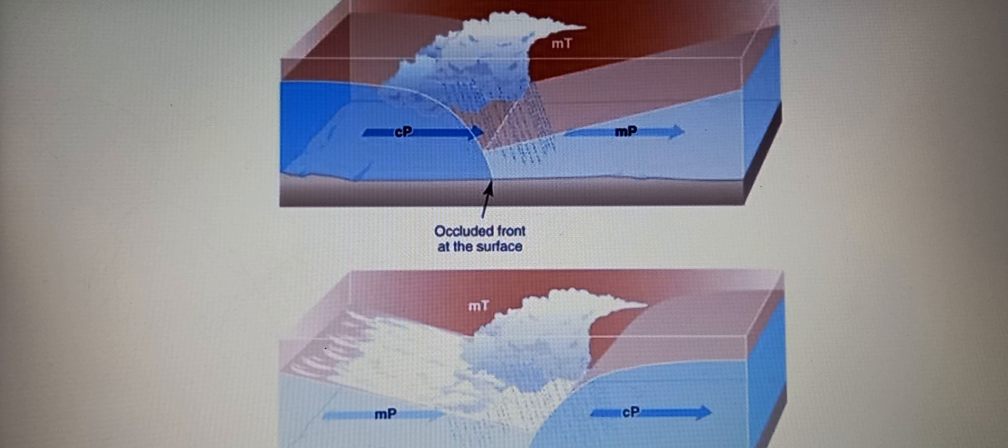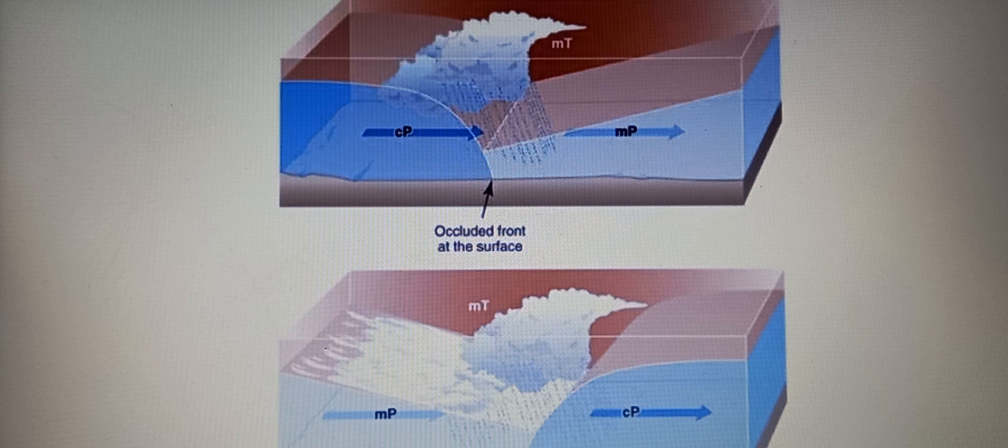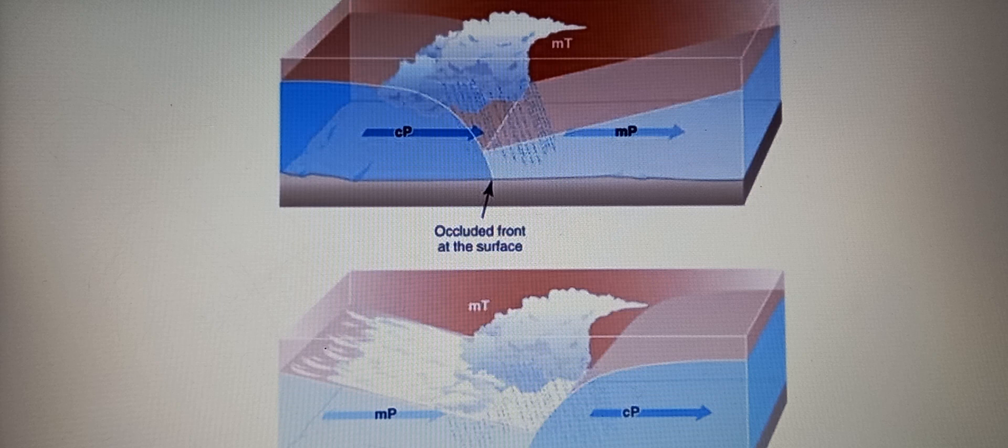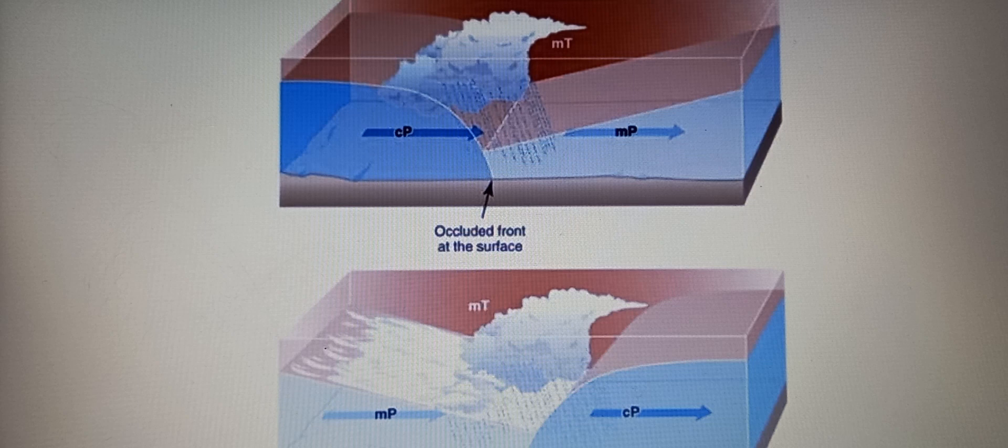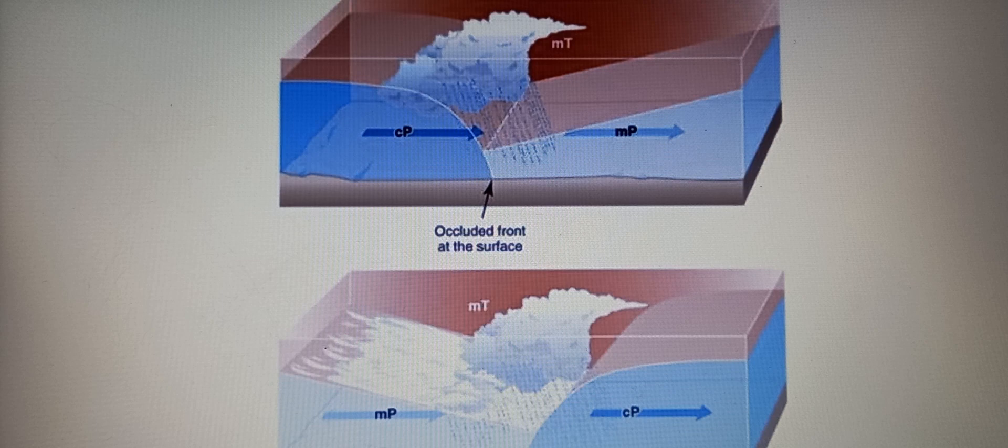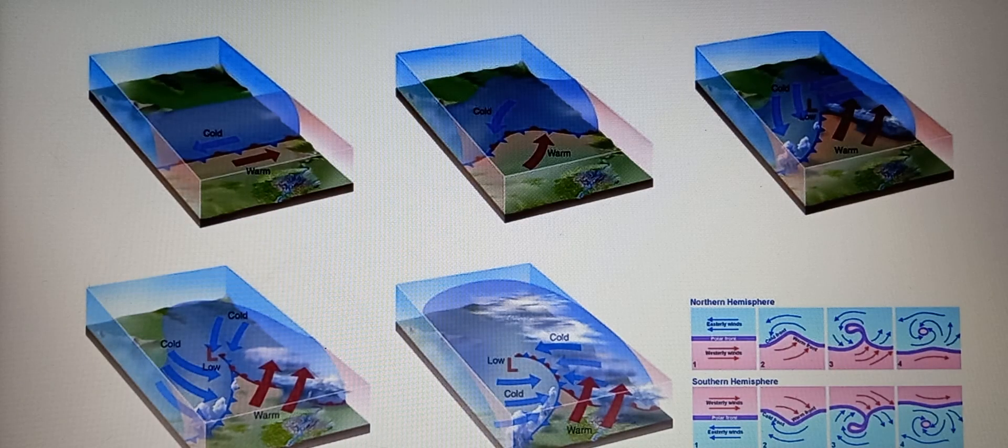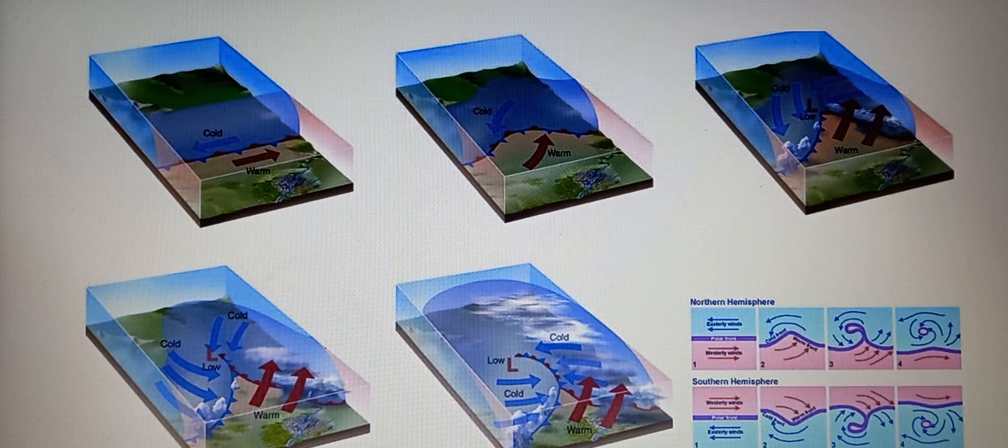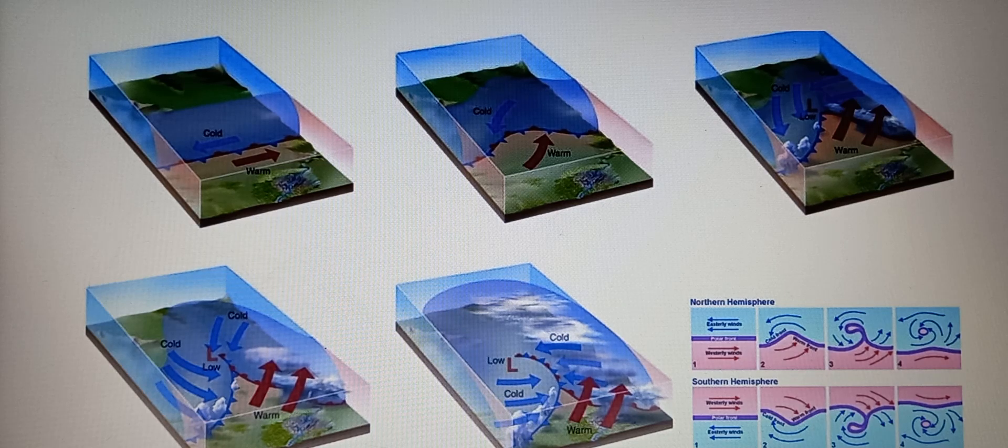In cold occlusion, as a cold front advances, it lifts the warm air, causing it to be sandwiched between the cold air behind the cold front and the cool air aloft. Cold occlusions are typically associated with colder temperatures and can result in a mix of precipitation types. While in warm occlusion, as the cold front catches up to the slow-moving warm front, the warm air is lifted, creating an occluded front.